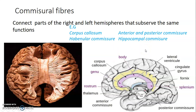We also have the habenular commissure, anterior and posterior commissure, and the hippocampal commissure. On the medial surface of the brain, the anterior commissure is just below the lamina terminalis, and the posterior commissure is located just below the pineal gland, near the tectum with its superior and inferior colliculi.